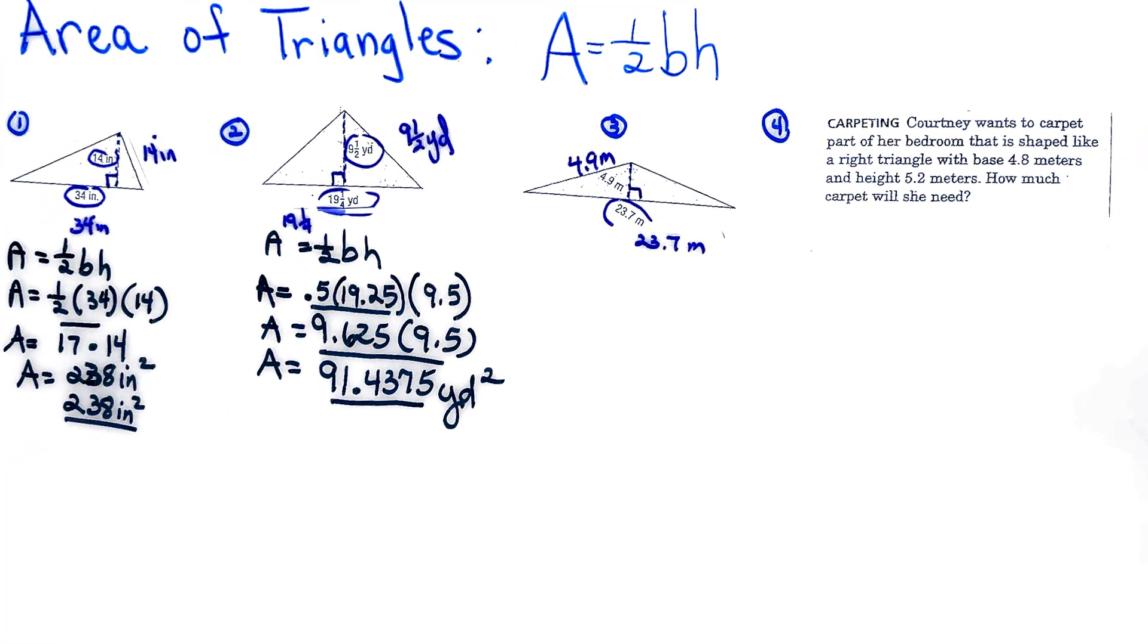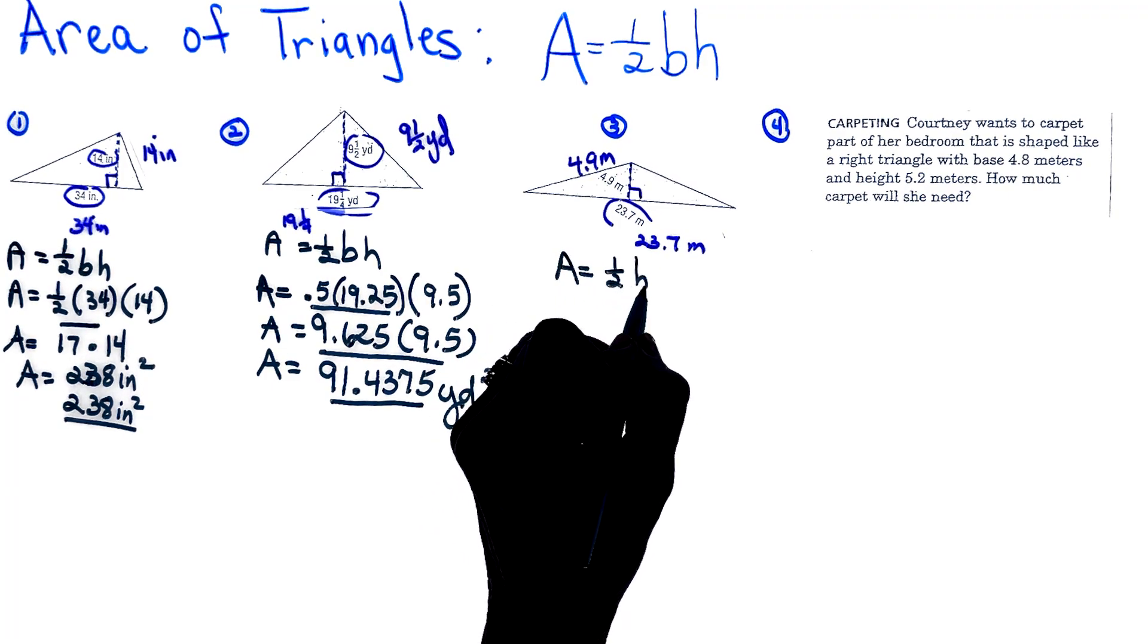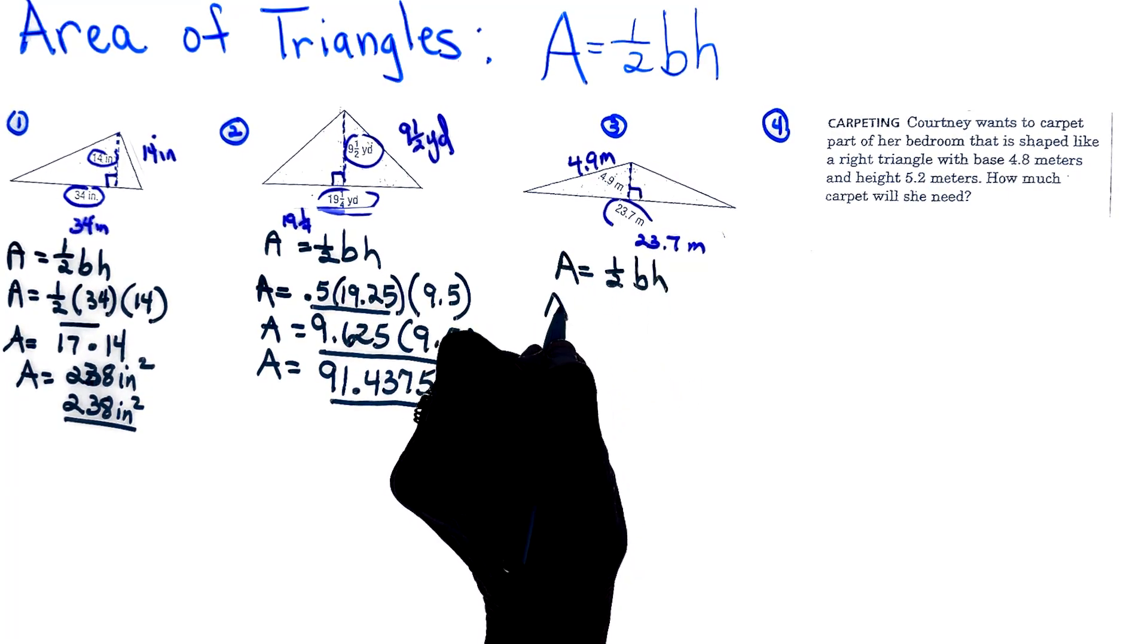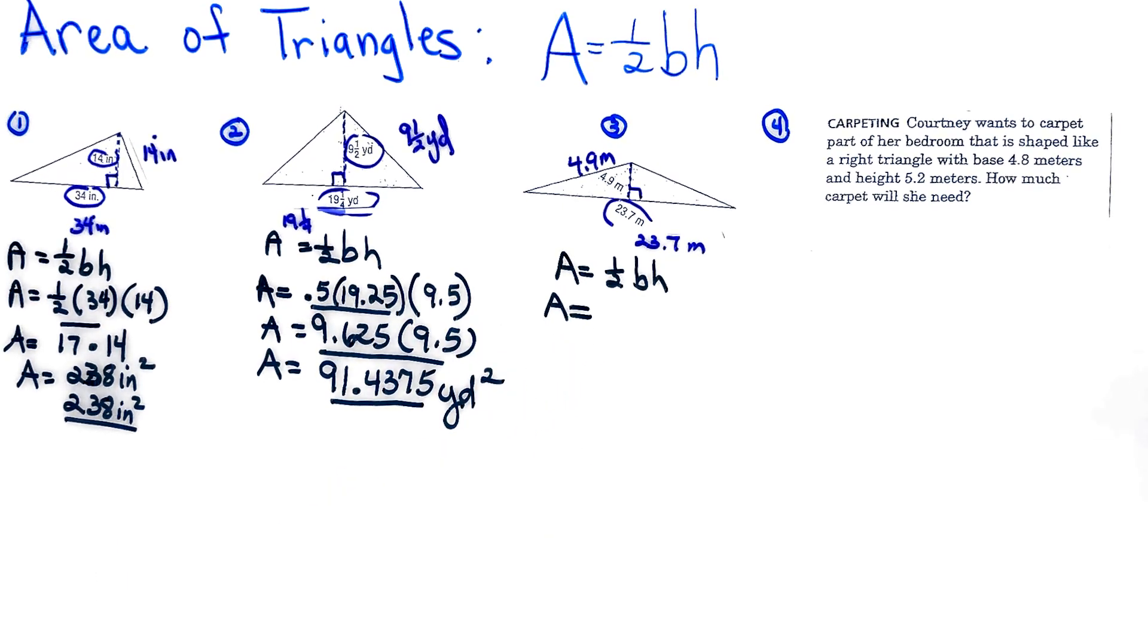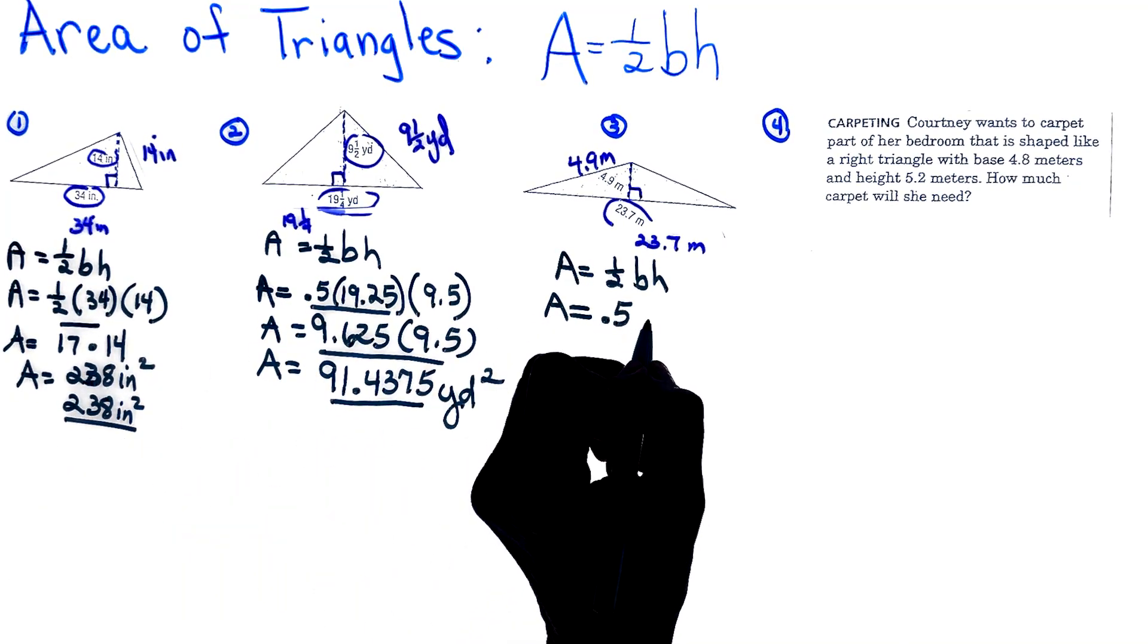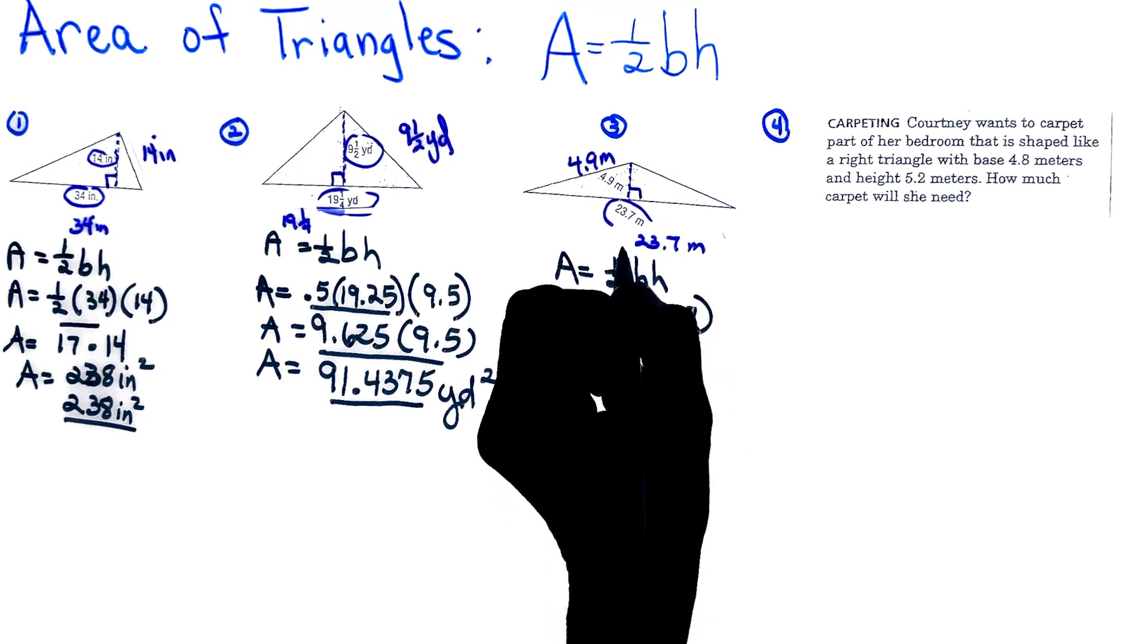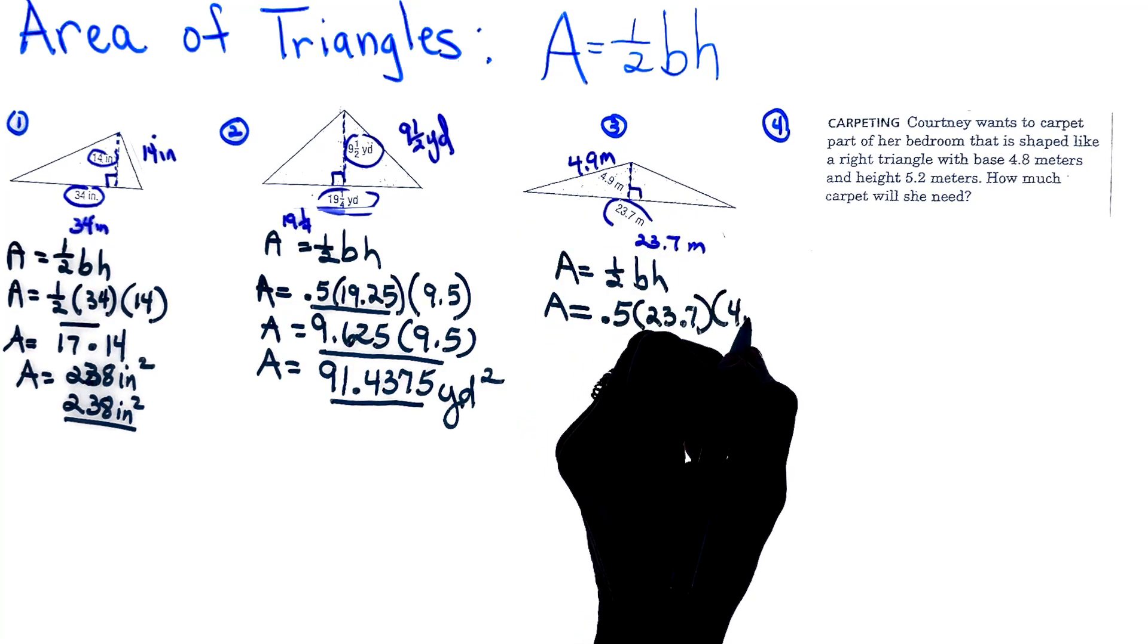Starting with our formula, area is equal to one-half my base times my height. Again, as I'm plugging in my numbers, I see that I do have decimals, so I think I'll just write one-half as a decimal. We know it's 0.5. My base was 23.7 and my height is 4.9.